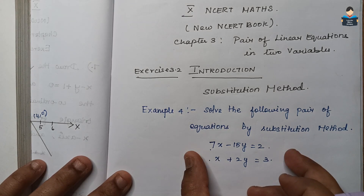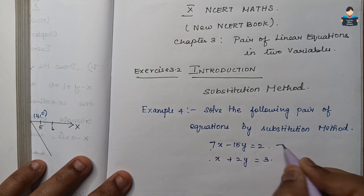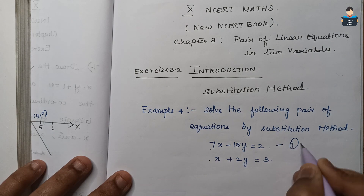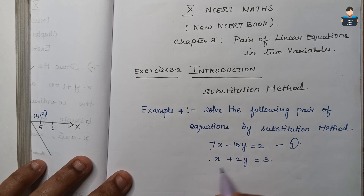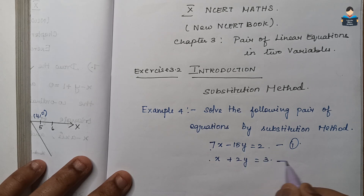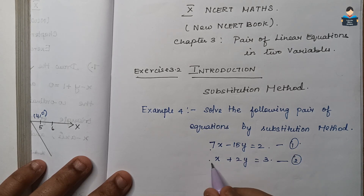So now we have the equations here. First equation: 7x minus 15y equal to 2. Second equation: x plus 2y equal to 3. Now we compare the equations.